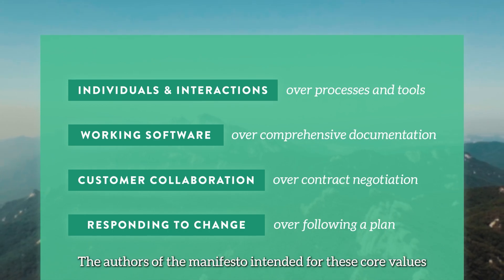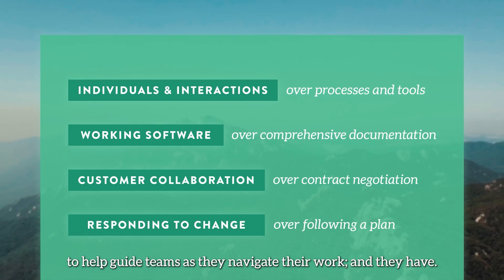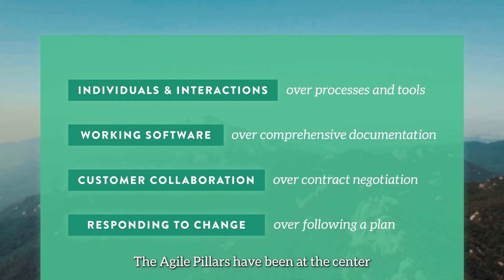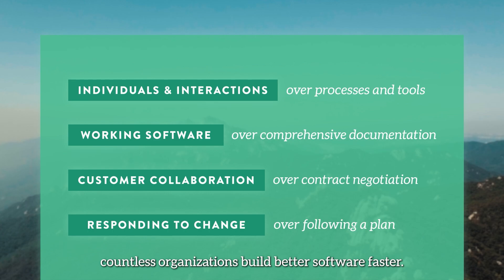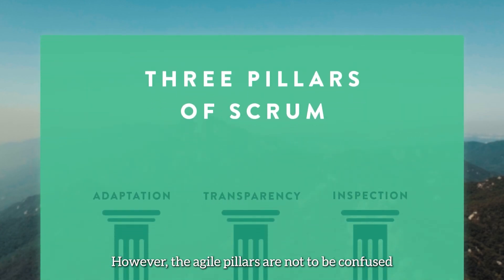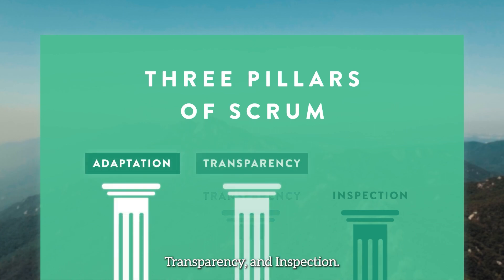The authors of the manifesto intended for these core values to help guide teams as they navigate their work, and they have. The Agile Pillars have been at the center of many successful Agile implementations and have helped countless organizations build better software faster. However, the Agile Pillars are not to be confused with the Pillars of Scrum established in the Scrum Guide, which are Adaptation, Transparency, and Inspection.